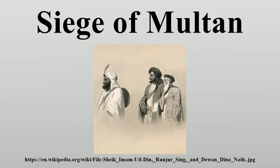The siege of Multan was a prolonged contest between the city and state of Multan and the British East India Company. The siege lasted between 19 April 1848, when a rebellion in the city against a ruler imposed by the East India Company precipitated the Second Anglo-Sikh War, and the 22nd of January 1849, when the last defenders surrendered.